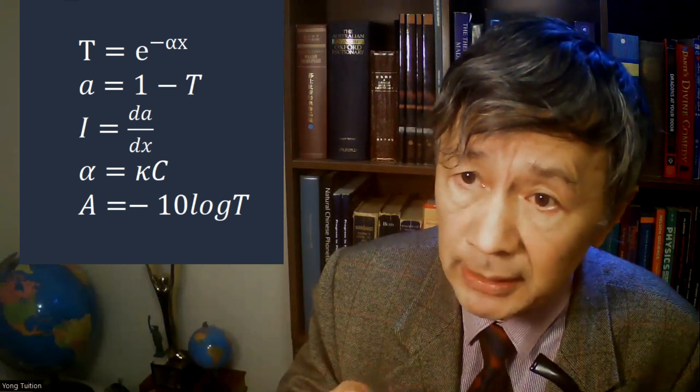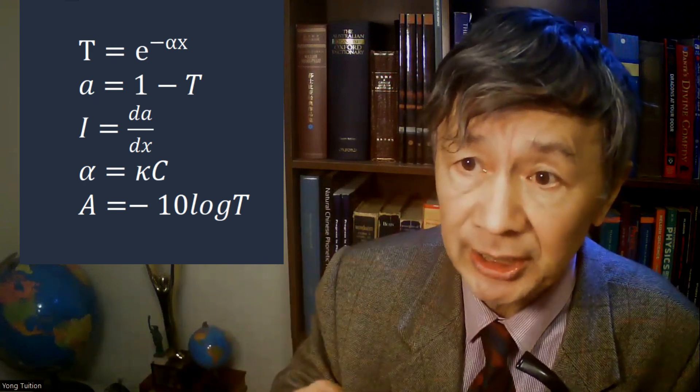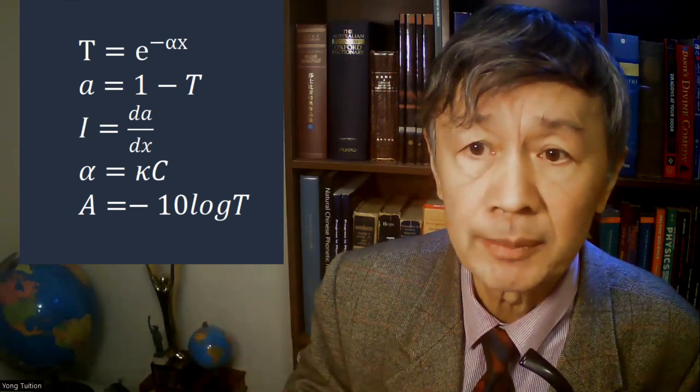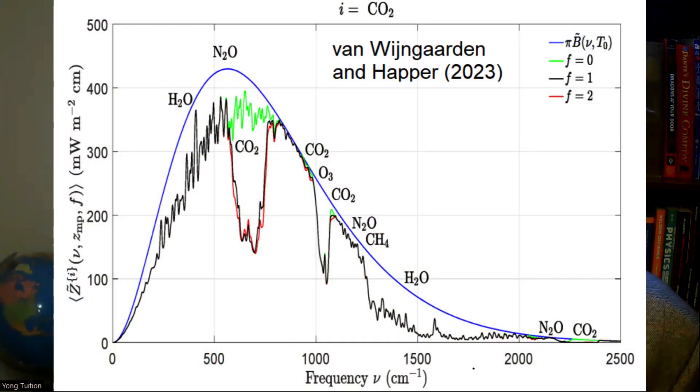This simple equation implies that both the IR absorption and the IR transmission are non-linearly determined by the gas concentration, if kappa is kept constant. But does that imply the dependence of the IR absorption intensity on the CO2 concentration, as shown in this calculated CO2 peak by van Wijngaarden and Happer, has to be logarithmic? Take it easy — we will see. To illustrate this tricky point, I use my favorite 3D plot provided by Akdemo.